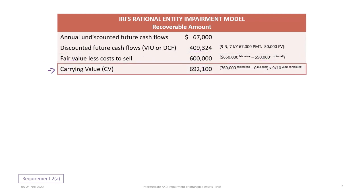Then we determine the carrying value, which was also calculated in tutorial 23B under ASPE — the calculations are the same. We had a $769,000 cost capitalized, no salvage value, and nine of ten years remaining. So the carrying value is $692,100.